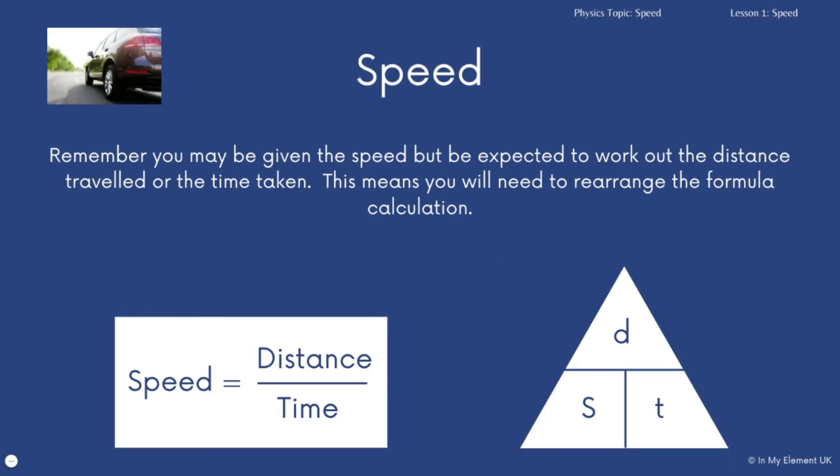When you're doing these calculations, remember, you might not always be given the distance and the time. You might be given the speed instead and missing one of the other measurements. So you might be missing the distance, for example. To calculate the distance, that means you haven't got the distance here, but you have got speed and time. And if you imagine there's a little multiplication sign here, that means that distance is equal to speed times time.